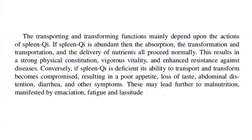The transporting and transforming functions mainly depend upon the actions of spleen qi. If spleen qi is abundant, then the absorption, transformation, transportation, and delivery of nutrients all proceed normally, resulting in a strong physical constitution, vigorous vitality, and enhanced resistance against diseases. Conversely, if spleen qi is deficient, its ability to transport and transform becomes compromised, resulting in poor appetite, loss of taste, abdominal distension, diarrhea, and other symptoms. This may lead further to malnutrition manifested by emaciation, fatigue, and lassitude.